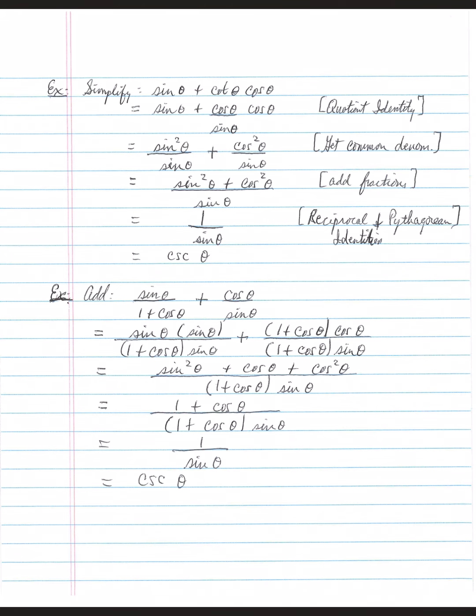The second example we're asked to add sin θ/(1 + cos θ) and we're going to add that to cos θ/sin θ. These two denominators are completely different. They have nothing in common, so I'm going to use both denominators as the common denominator.